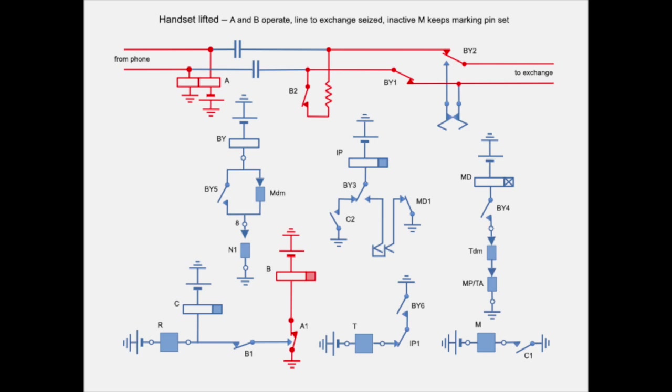Relay B operates then and contact B2 closes a loop which seizes the exchange. The capacitors convey the ringtone from the exchange to the calling telephone. Contact A1 opens and closes when the dial pulses are received.